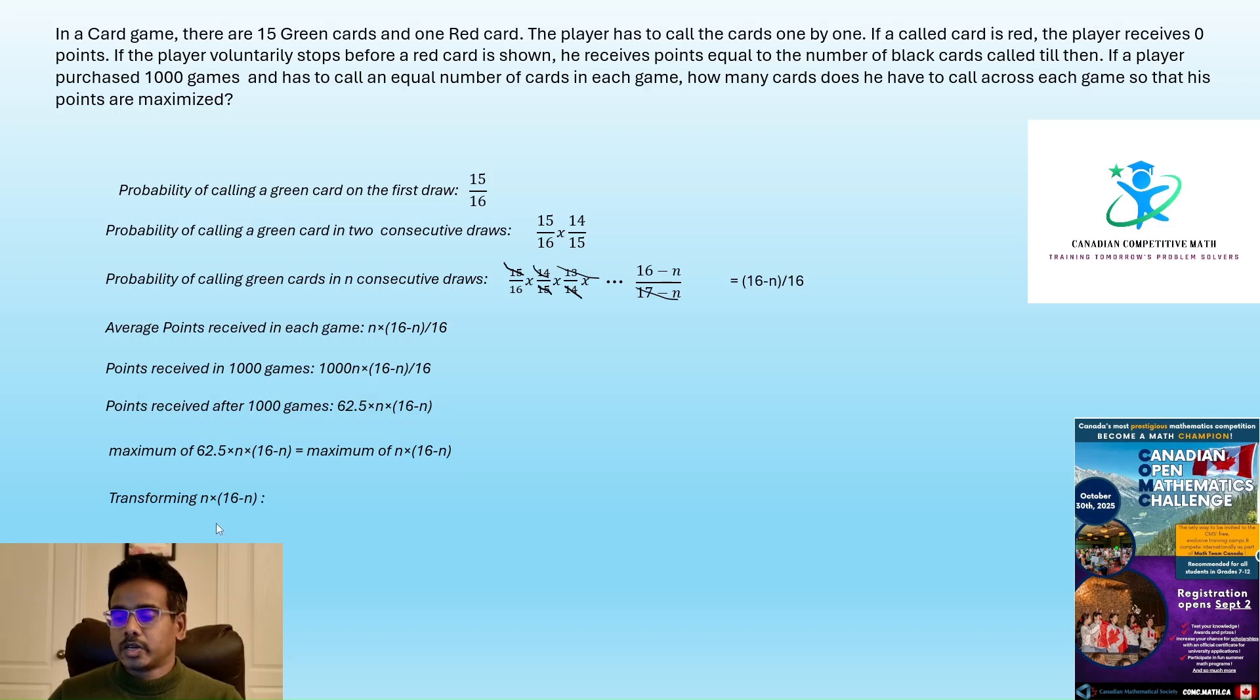So let us try to transform n into 16 minus n, so that we can find what its maximum value is. So let us start with n into 16 minus n. We can write this if we multiply n with the term inside, it will be 16n minus n square. We add 64 and subtract 64 here. And if we rearrange these terms, we pull this minus n square ahead.